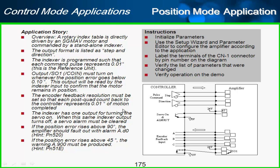The encoder feedback resolution must be set so that each post-quad count back to the controller represents 0.01 degree of motion completed. So you see how that works here, the controller is going to send a pulse to the amplifier and we want the encoder feedback, when it's read as quadrature, encoder feedback to also show that that 0.01 degree of motion has taken place.